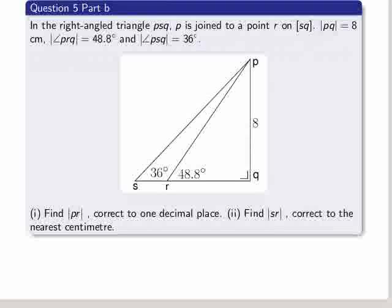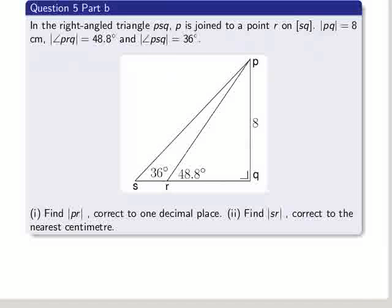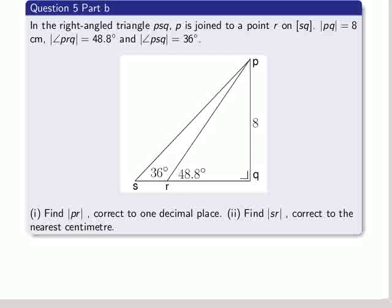Moving on to part B now. In the right angle triangle PSQ, P is joined to a point R on the segment SQ. The length of PQ is 8 centimetres, the angle PRQ is 48.8 degrees, and the angle PSQ is 36 degrees. You can see that all in the diagram.